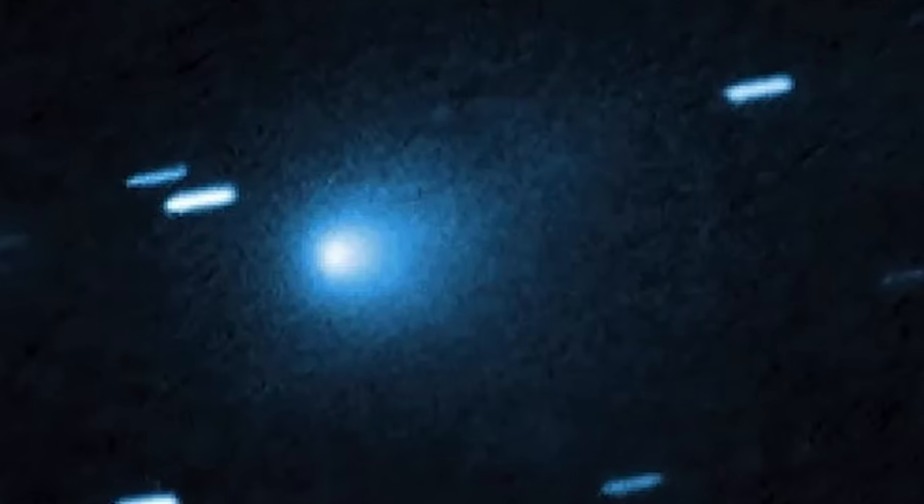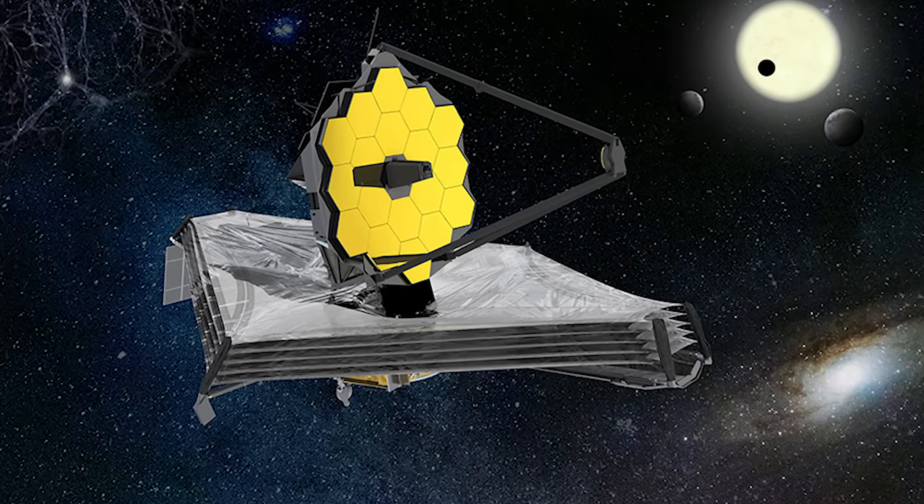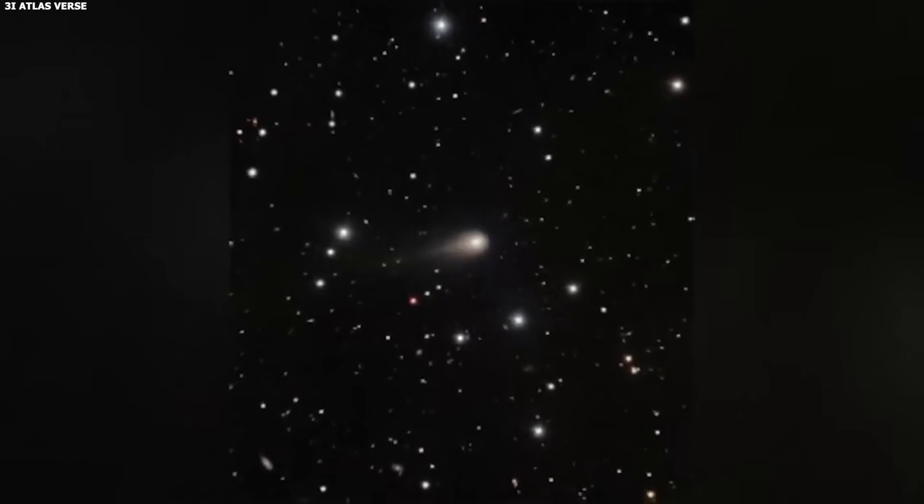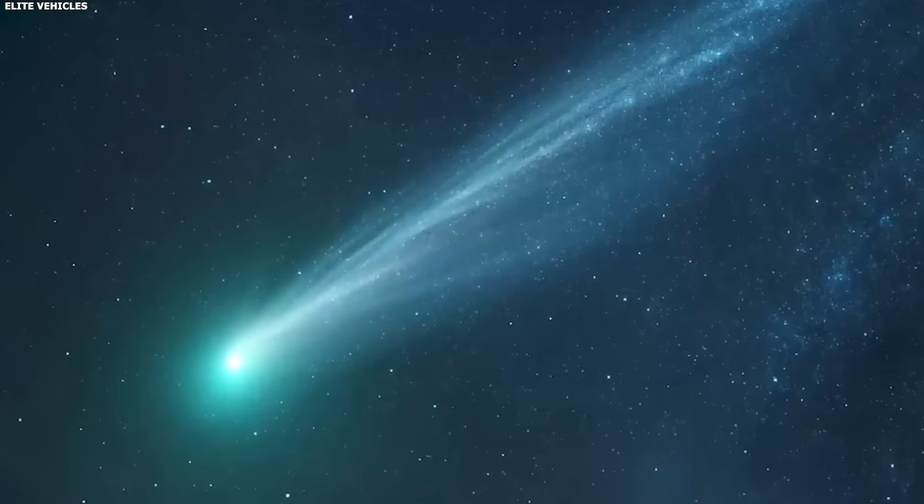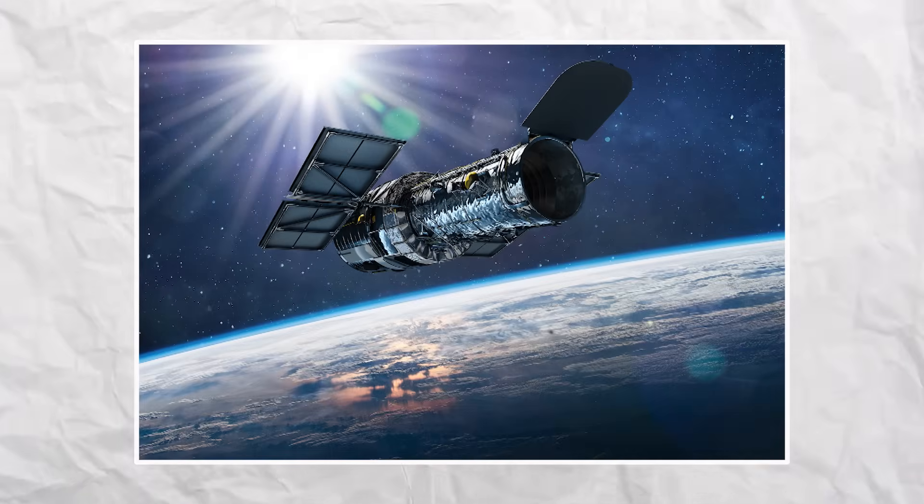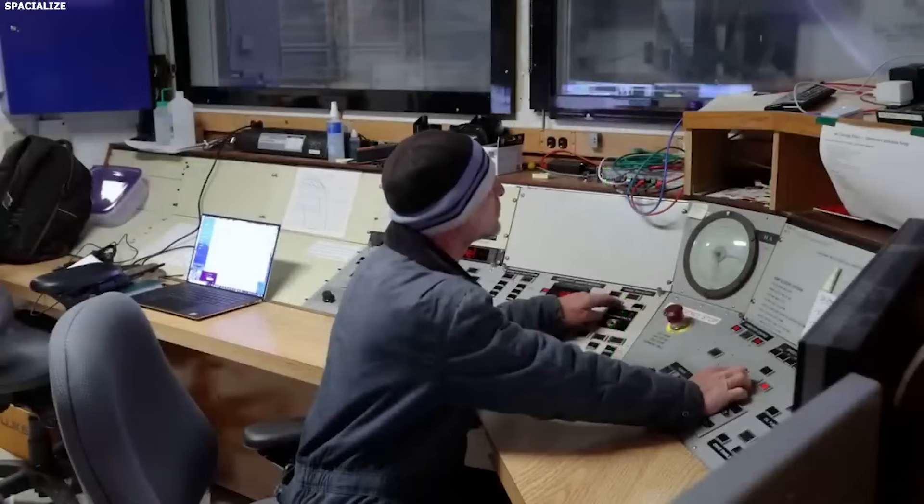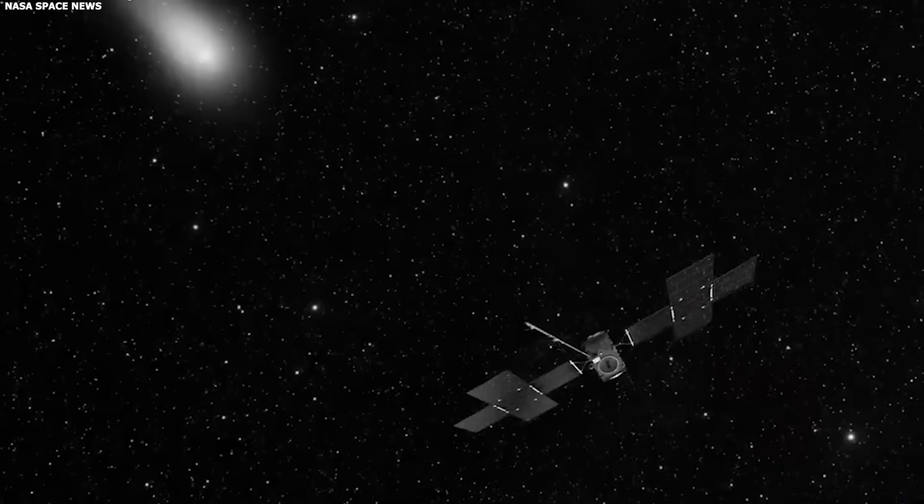Here's another problem. NASA held a press conference about 3I Atlas on November the 19th, 2025. They discussed observations from Hubble, from the James Webb Space Telescope, from Mars orbiters. They talked about the comet's composition, its size, its trajectory. They didn't mention the anti-tail. Not once. That's strange. Because this is one of the most visually obvious features of the comet. You don't need a PhD to see it. You just need to look at the images. And NASA has those images. Hubble is their telescope. They processed the data. They released the images to the public. And then they held a press conference and didn't bring it up. Maybe they don't think it's important. Maybe they have an explanation and didn't feel the need to address it publicly. Or maybe they don't have an explanation and they're waiting for more data before saying anything. We don't know. But the silence is odd.